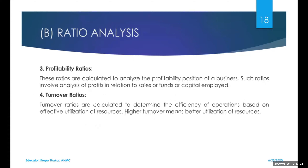Profitability ratios are calculated to analyze the profitability position of an organization, involving analysis of profit in relation to sales. Turnover ratios are calculated to determine the efficiency of operations — whether activities are carried out with effective utilization of resources. High turnover ratios mean resources have been well utilized. Every organization aims for high turnover ratios to make the best use of human, physical, and capital resources.